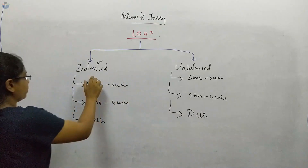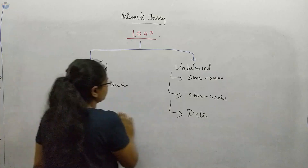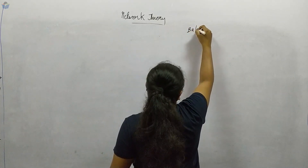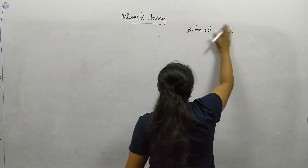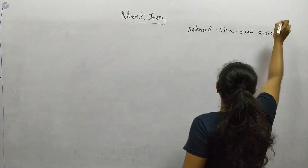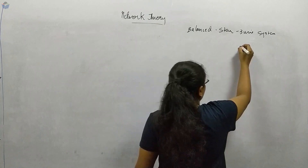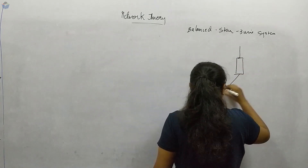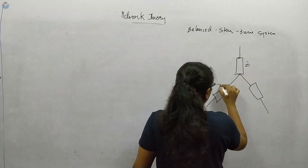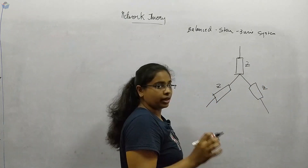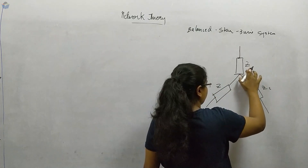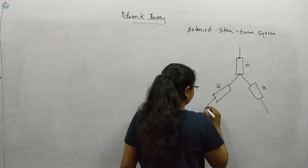Let us start with the balanced star three-wire system. Balanced means whatever impedances are present, they will all be the same value. If it is unbalanced, the impedances become Z1, Z2, and Z3. Since we are looking at the balanced case, we will assume all the impedances to be equal.